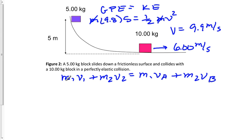Starting off, I'm not going to use significant digits here. I'll just use one significant digit. So I'm going to say 5 times 9.9 plus 10 times 0. Before the collision, this box is not moving and the 9.9 is what we solved for above.